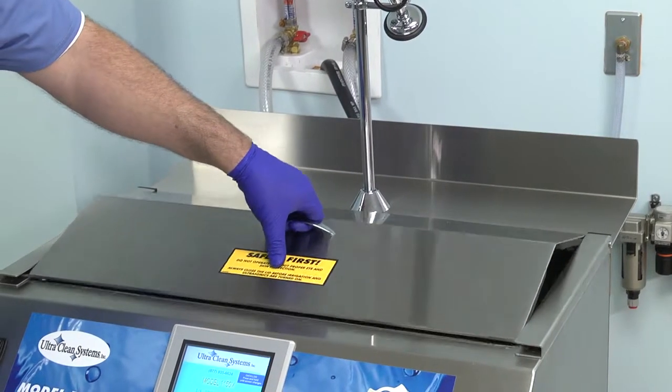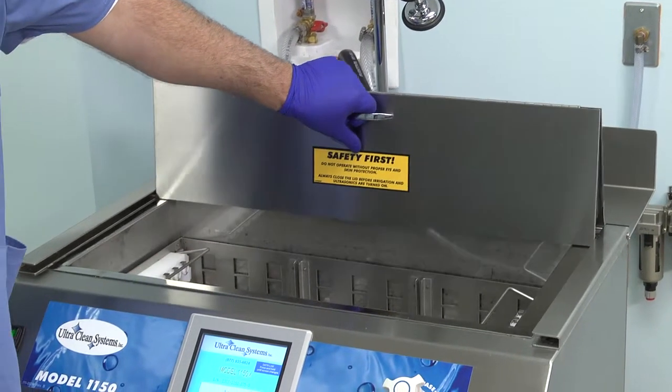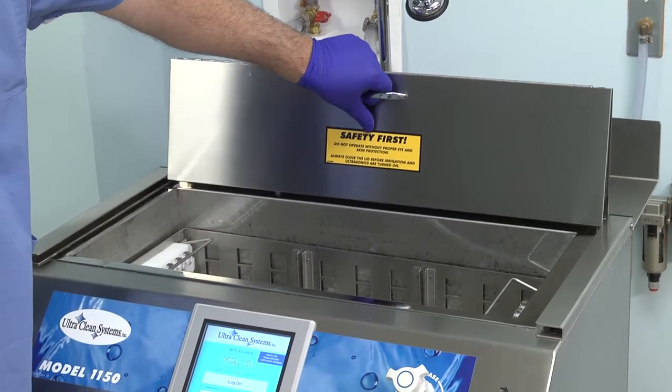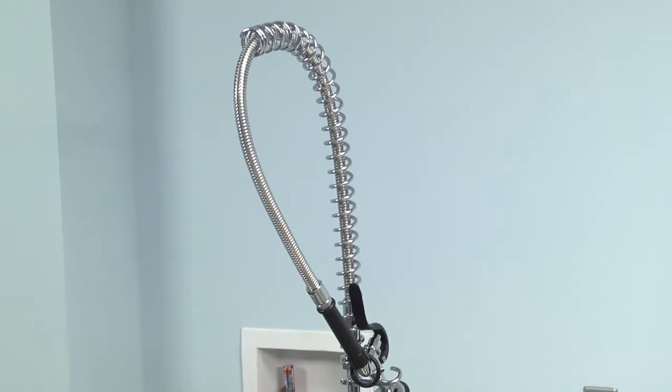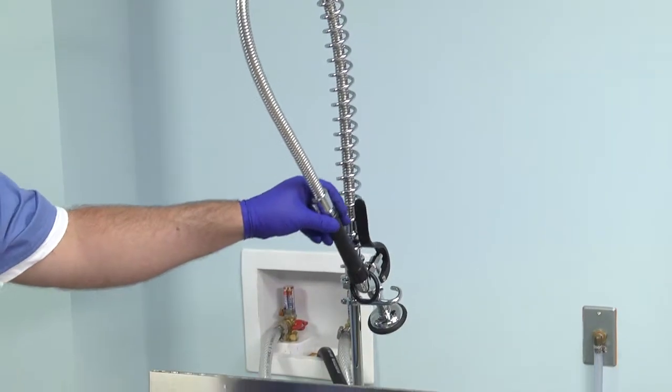To open the lid on the Model 1150, lift the handle up gently until the lid is fully open. Make sure the tabs are in the locked position. For rinsing, a convenient spray nozzle is provided on both models.